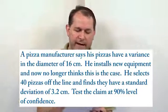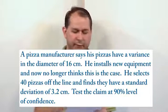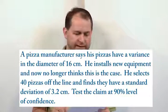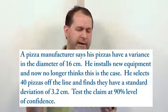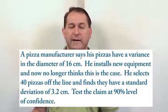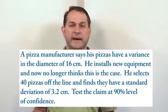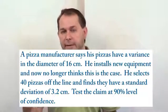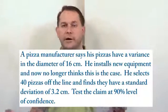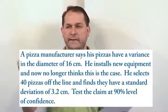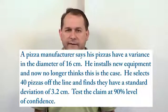Notice that it says the variance in the diameter is 16 centimeters, and he installs new equipment, and now no longer thinks this is the case. This doesn't sound like a left or a right tail test, because he doesn't say he thinks the diameter is bigger now, or smaller now, or that the null hypothesis is bigger or smaller. All it says is he originally thought the variance was 16, and now he doesn't think it's 16 anymore.